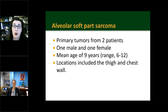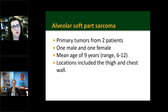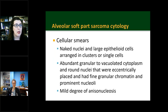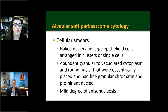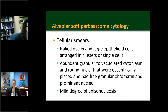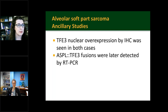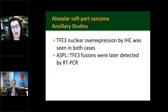Touching on some of the smaller entities in the cohort: alveolar soft part sarcoma. There were primary tumors from two patients with a mean age of nine years, located in the thigh and chest wall. They showed cellular smears with naked nuclei and large epithelioid cells arranged in clusters and as single cells, with abundant granular to vacuolated cytoplasm, round eccentrically placed nuclei, and finely granular chromatin. There was a mild degree of anisonucleosis. TFE3 nuclear overexpression by IHC was seen in both cases, and fusions were later detected by RT-PCR.